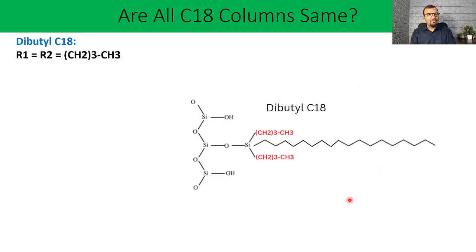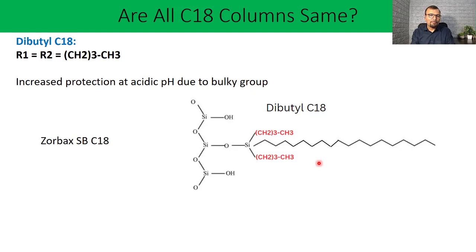What is dibutyl? In case if your R1 and R2 is dibutyl, as you can see in the picture, then this is called a dibutyl C18 column. Is it the same as dimethyl? No. Because of this dibutyl, which is a branched chain alkyl group, the steric hindrance gets increased, which is not present in dimethyl C18 column. So it can have different retention time and sometimes different selectivity, especially for positional isomers. It also increases the protection of the bonded stationary phase at acidic pH. Zorbax SB C18 is the commercial example of this particular stationary phase.